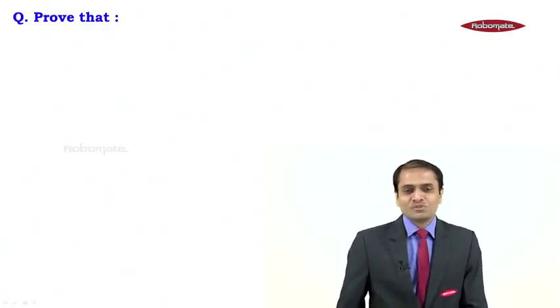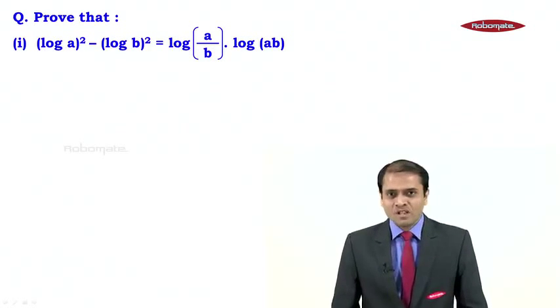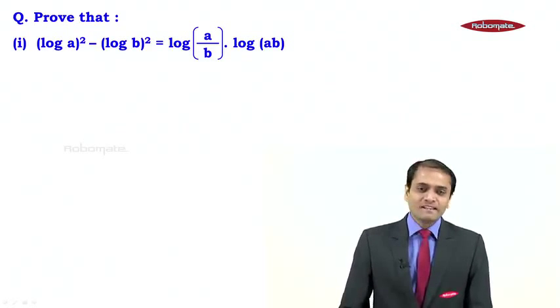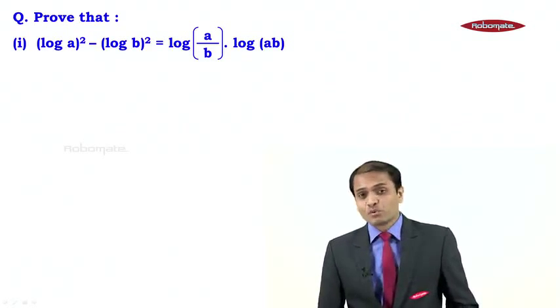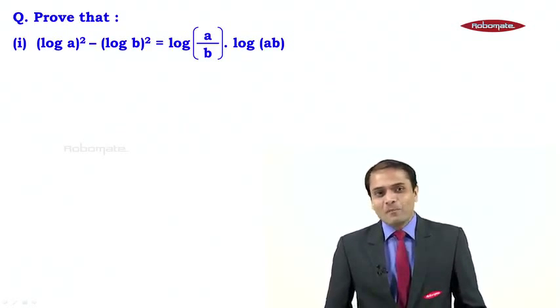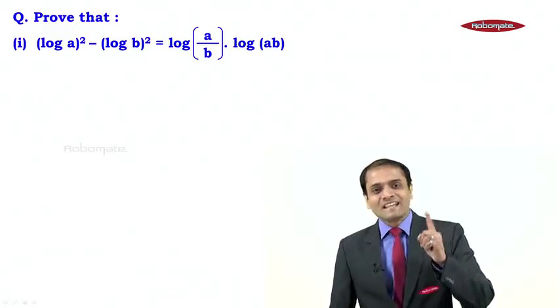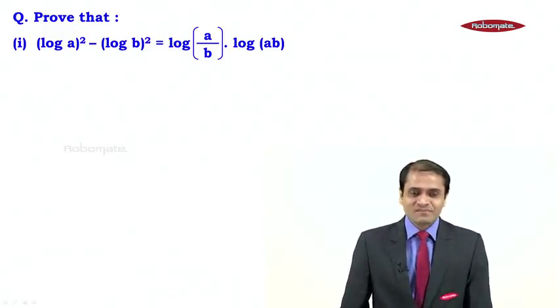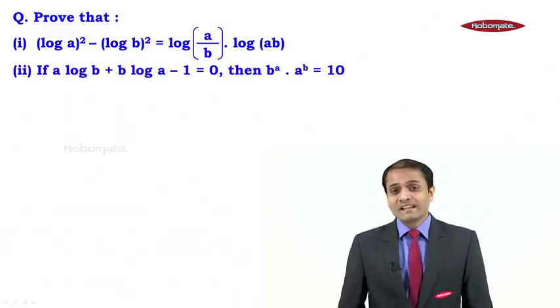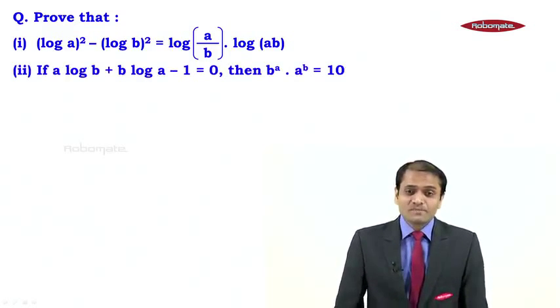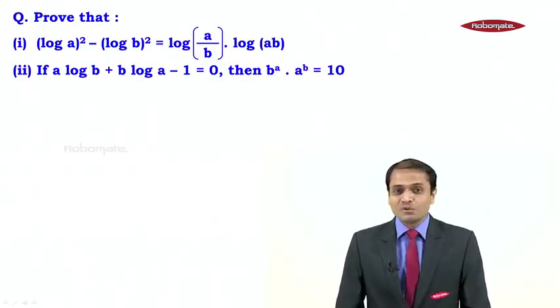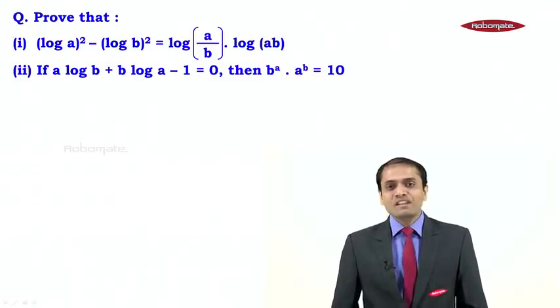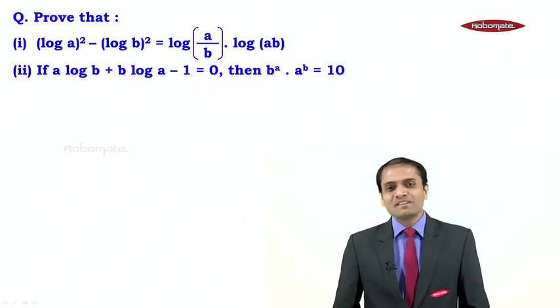Hello students, in this module we are going to see two very simple proof-based questions. The first one: prove that log(a)² minus log(b)² is equal to log(a/b) times log(ab). The second one: if a·log b + b·log a minus one is equal to zero, then prove that b^a times a^b is equal to 10.